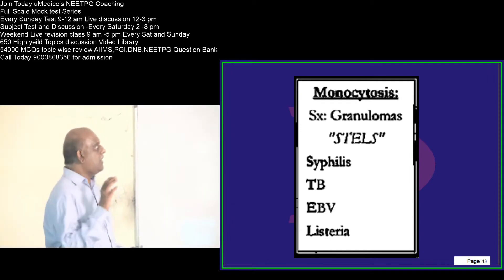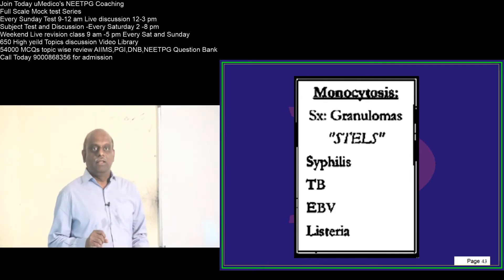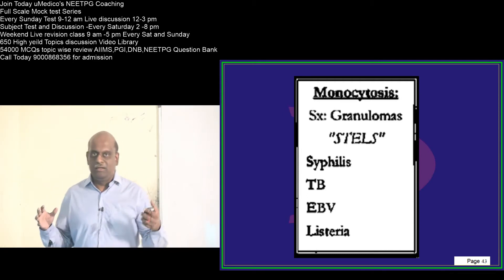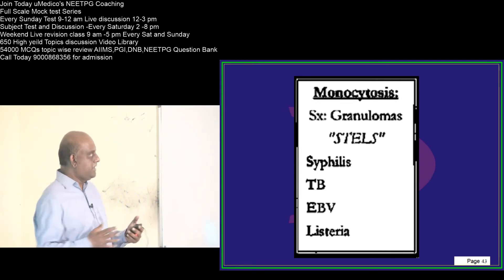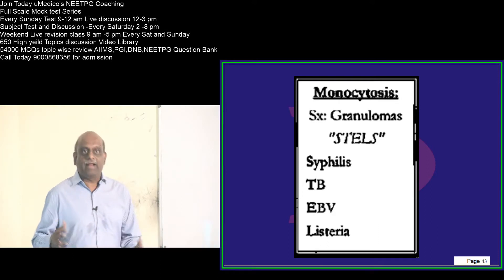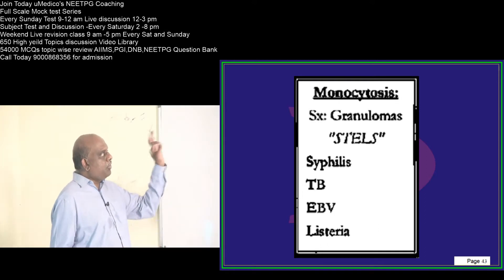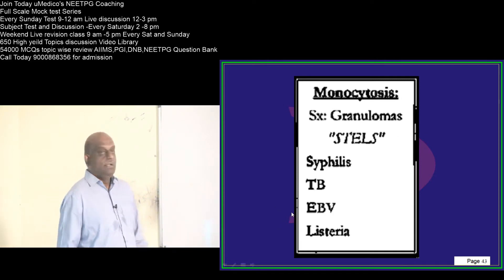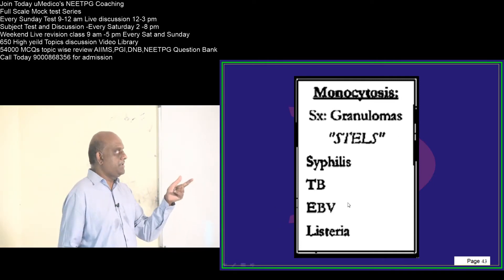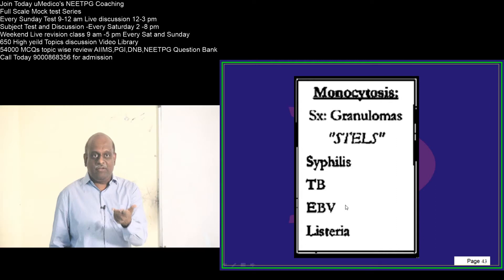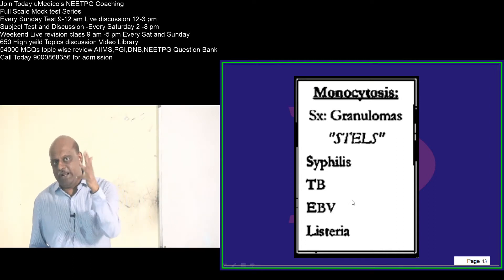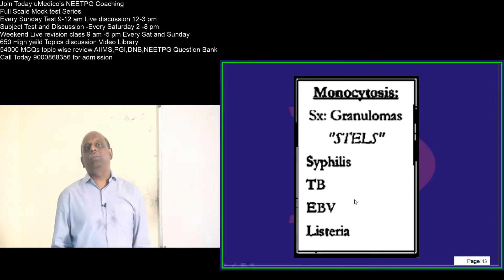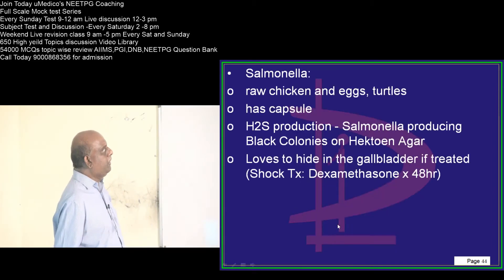Now, monocytosis — there are certain bacterial and viral conditions that lead to monocytosis and the formation of granulomas. What are they? Syphilis, tuberculosis, Epstein-Barr virus, Listeria. These four organisms you should not forget when you talk about monocytosis and granulomas.